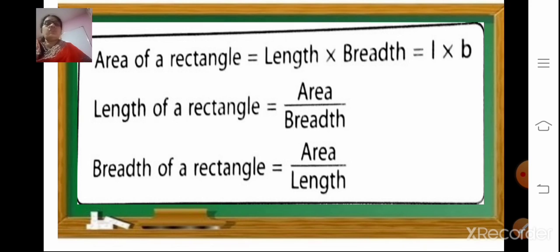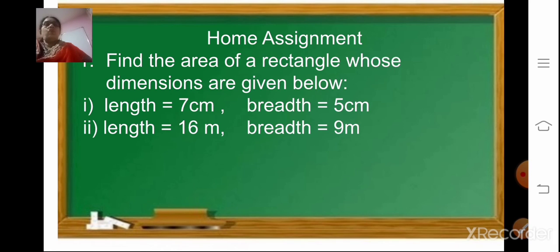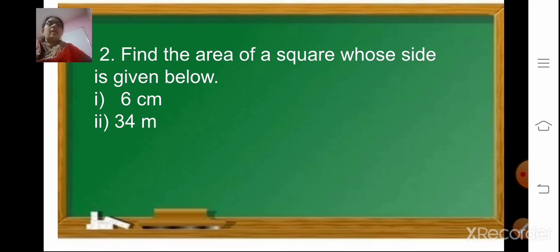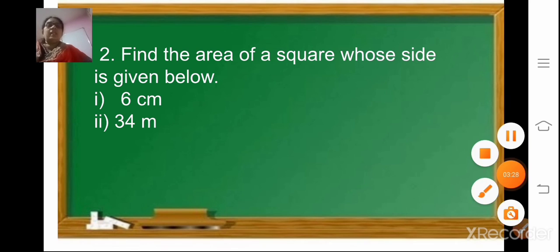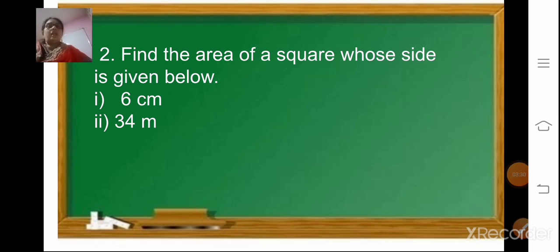Once you are thorough with the formulas it will be easy to solve any type of sums. For your home assignment, find the area of a rectangle using the given dimensions for two sums, and find the area of a square using the given side for two more sums — multiply side into side. Do this home assignment in your homework part. In the next class we'll start with the revision. Thank you for today and have a good day, bye.